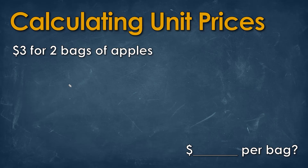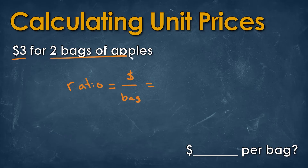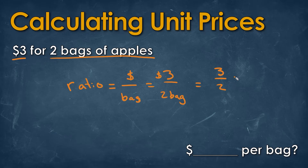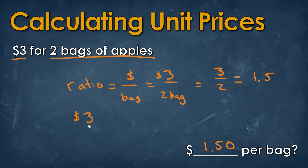Let's try another example. We're looking at ratios in terms of a fraction. We have money at the top and bags of apples at the bottom. For three dollars for two bags of apples, we have three dollars on top and two bags of apples at the bottom. If we simplify that, we get three over two. We can leave it as three over two, or simplify it: three over two equals 1.5. So that means one and a half dollars per bag of apples, or three dollars for every two bags of apples. That is the ratio, simplified to $1.50 per bag.